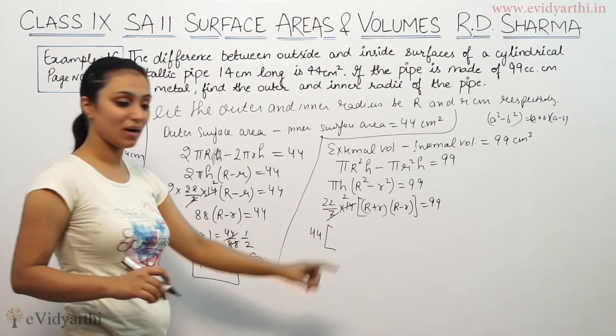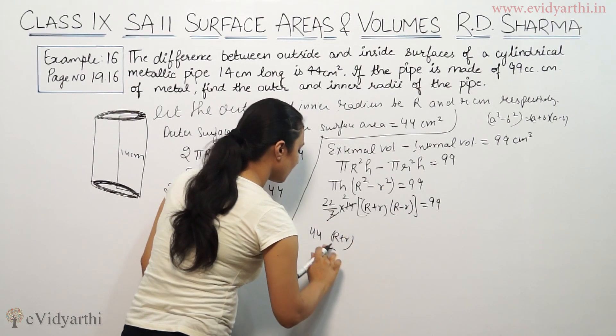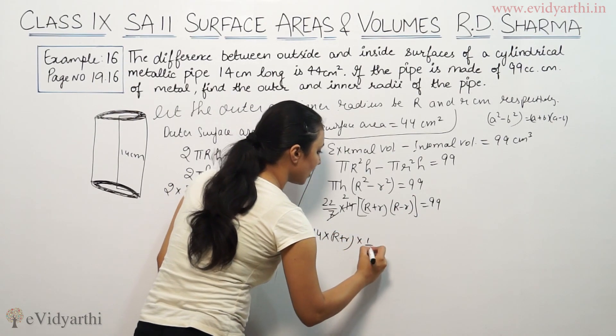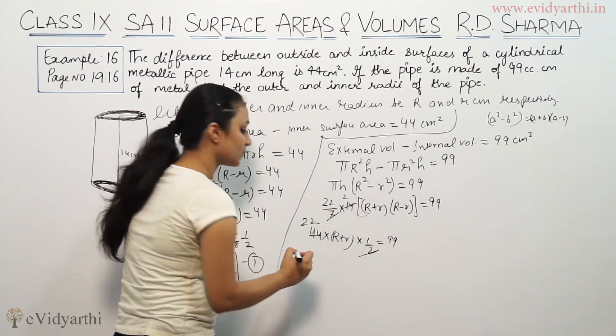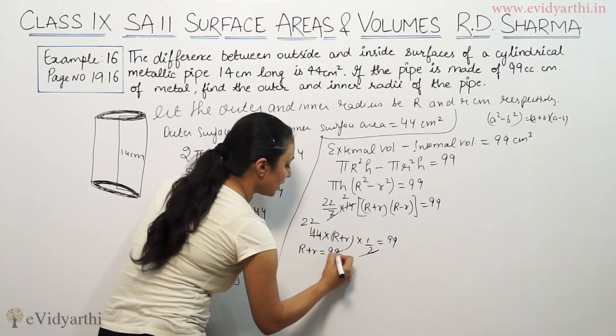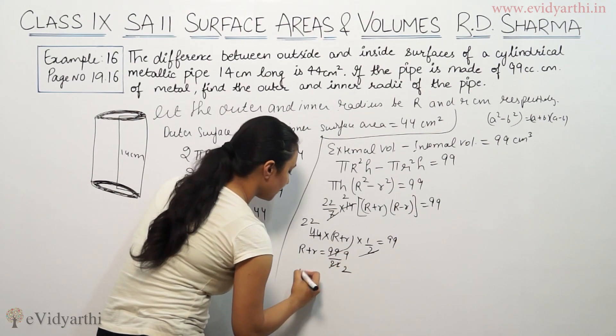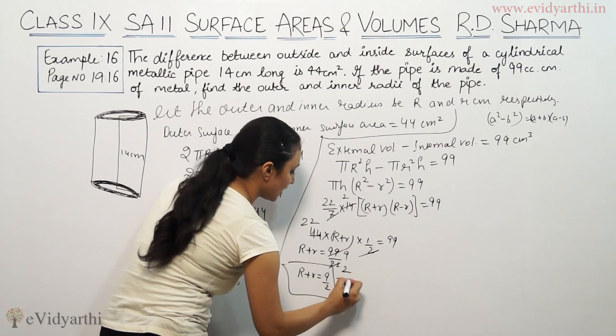R - r we know is 1/2. So (R + r)(1/2) = 99. 22/7 × 14 cancels to give 44. So (R + r) × 1/2 = 99. Therefore R + r = 99/44 × 2 = 9/2. This is the second equation.